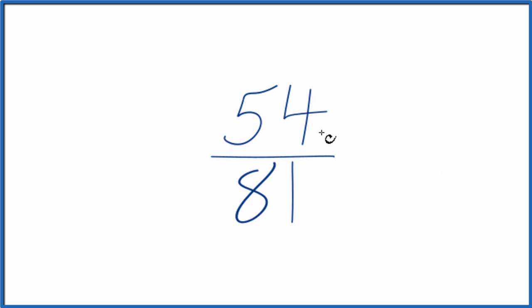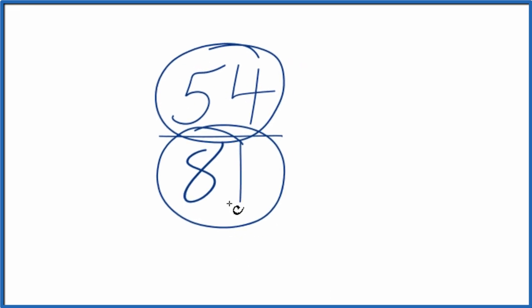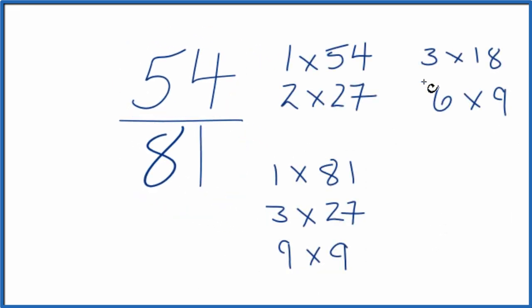To do that, we need to find a common factor, something that goes into 54 and 81 evenly. So these are the factors for 54 and 81. As I look at the factors for 54 and 81, the greatest common factor is 27.